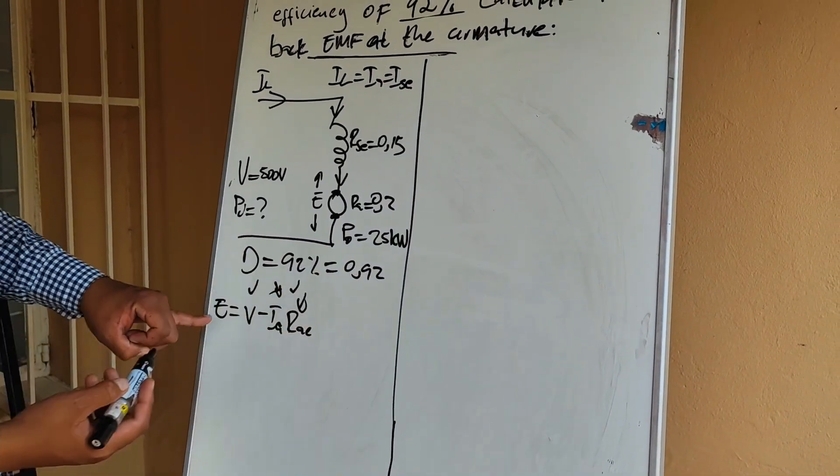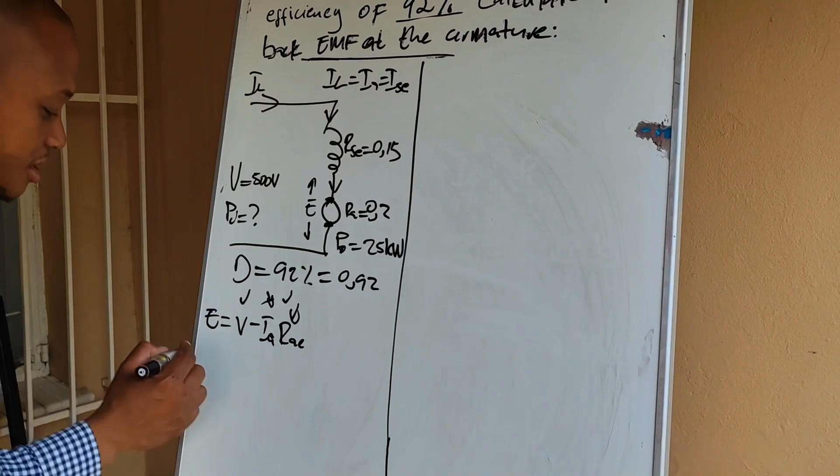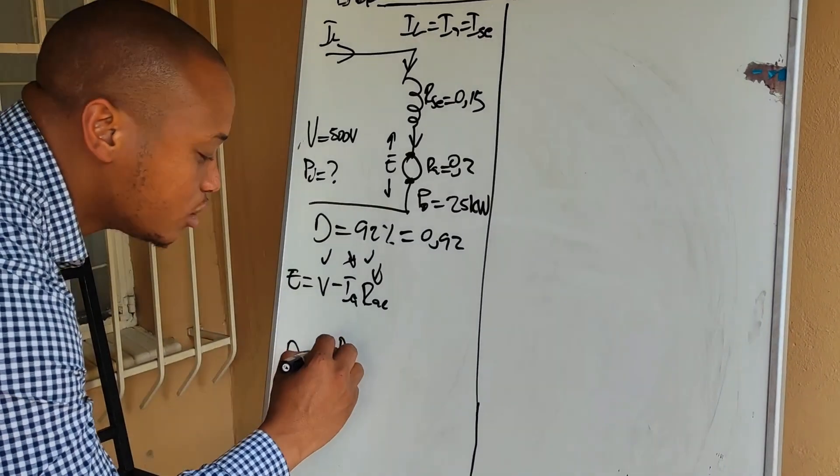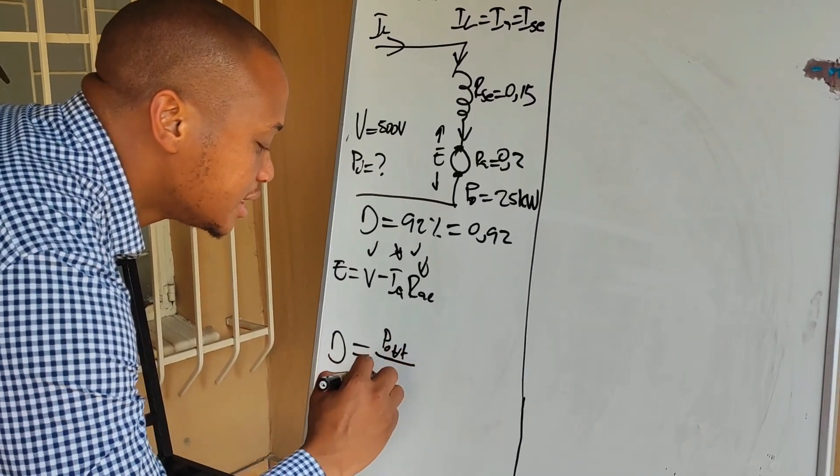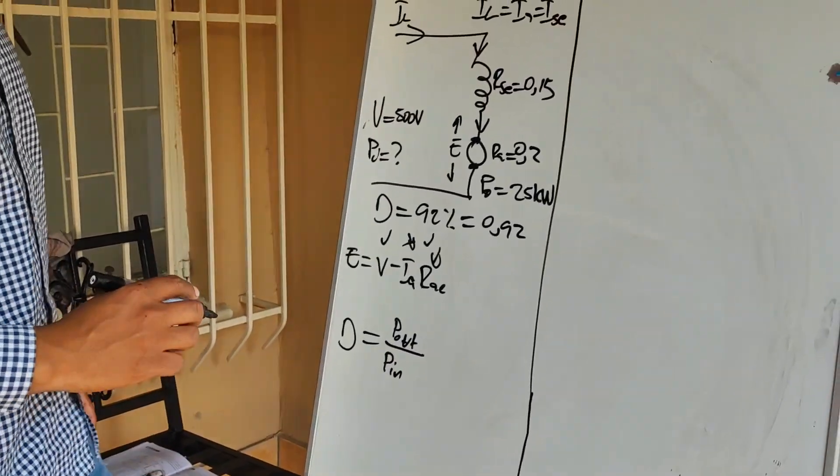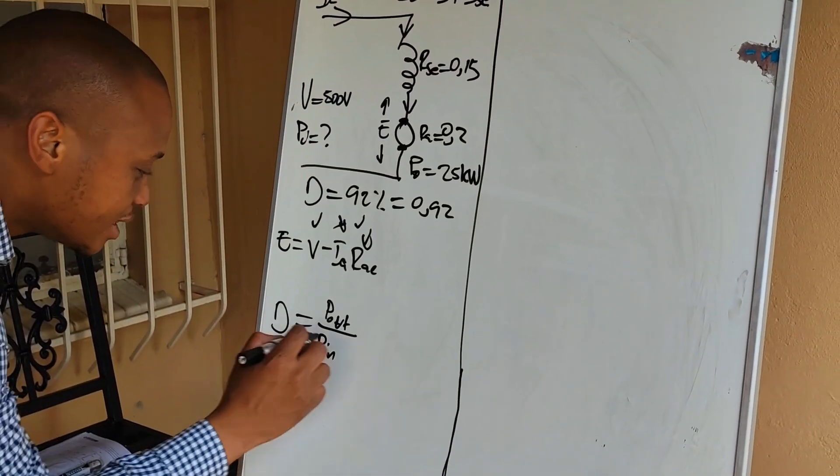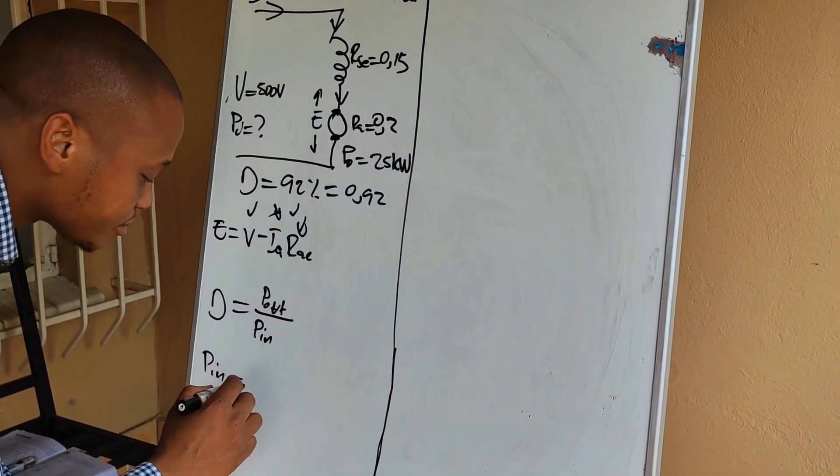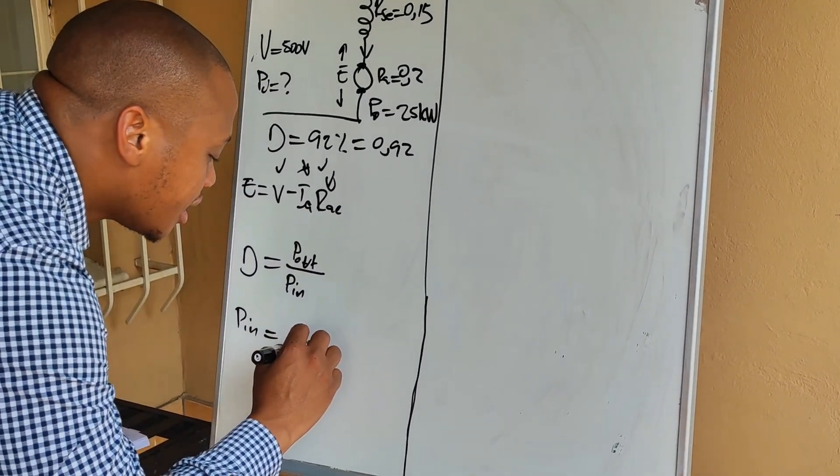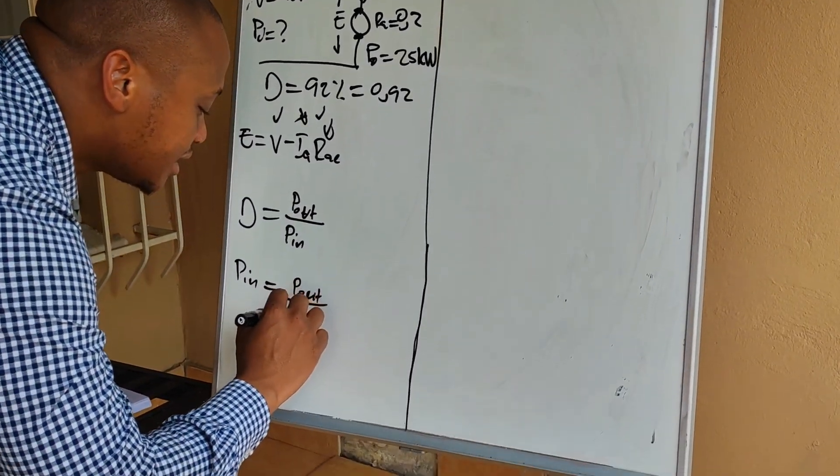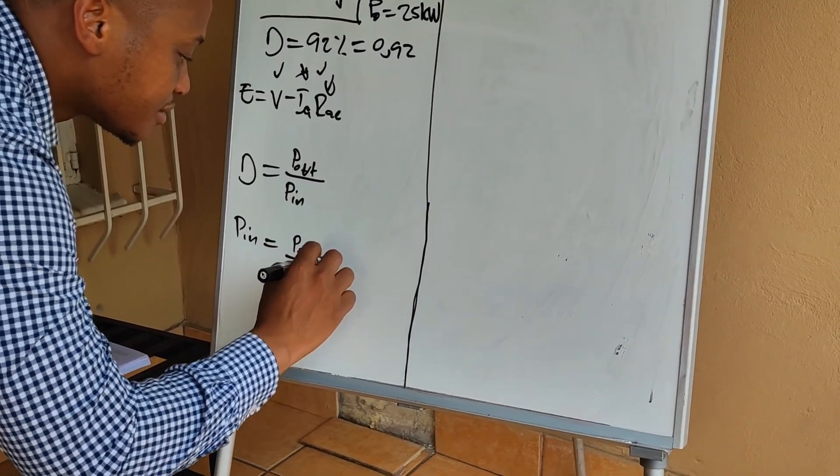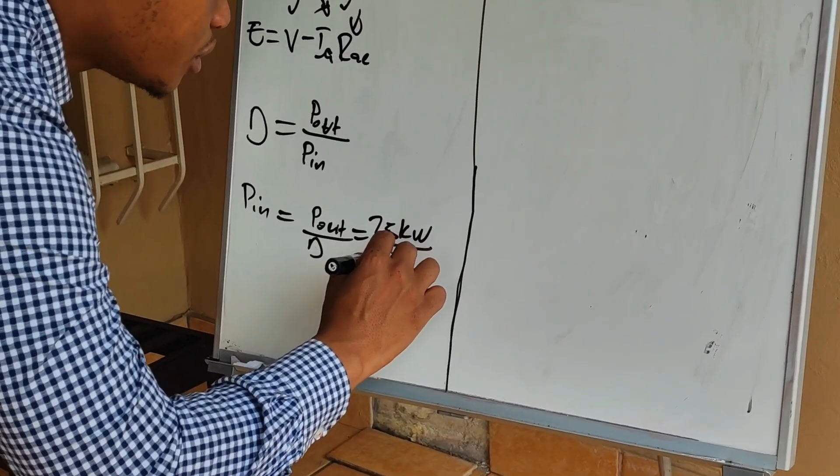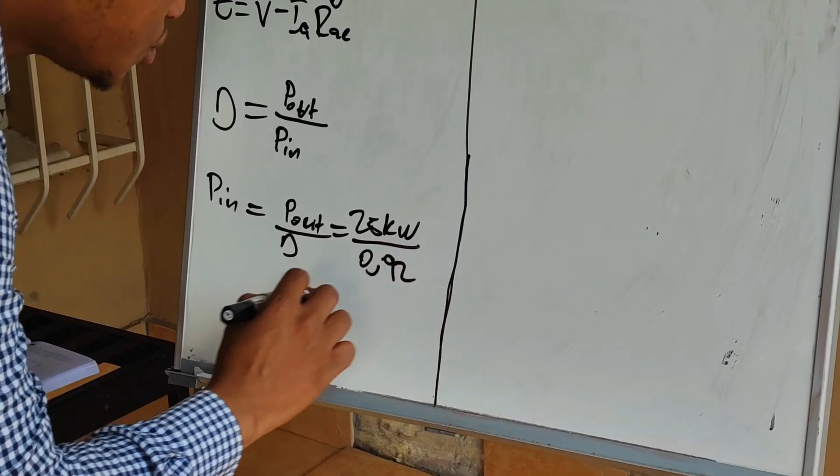But I am given an output power and an efficiency. That means I can say the efficiency of any operating machine is equal to the output power P out divided by P in. So I can then calculate the value of P in which is equal to P out divided by the efficiency which is equal to 25 KW divided by 0.92.